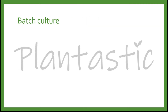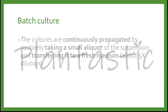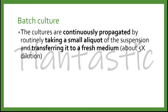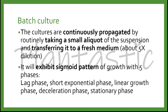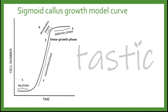For batch culture, the cultures are continuously propagated by routinely taking a small aliquot of the suspension and transferring it to a fresh medium, about a 5-fold dilution. The culture will exhibit a sigmoid pattern of growth with 5 phases: lag phase, short exponential phase, linear growth phase, deceleration phase, and stationary phase. This is a sigmoid callus growth model curve.